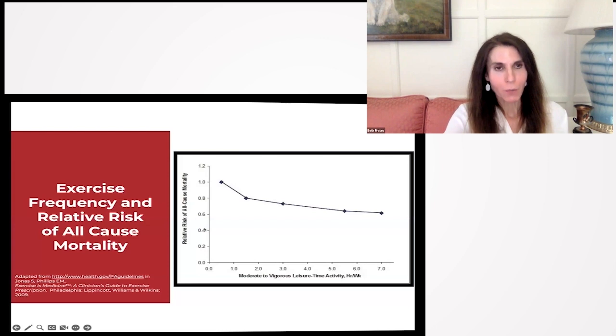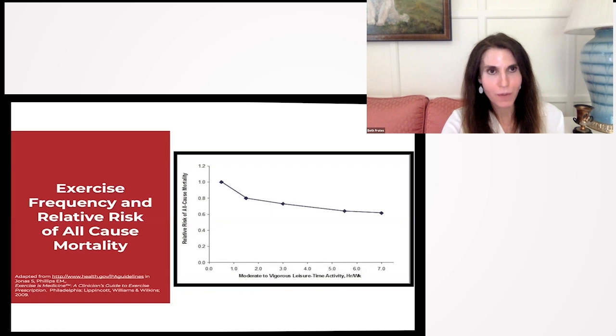This is from the original recommendations from the United States Health and Human Services, and it's how these guidelines were originally created. Here we have on the x-axis moderate to vigorous leisure time activity in hours per week. I'm going to translate that into hours for this graph. 150 minutes, if you do the math, that is two and a half hours right here. That's the recommended dose of physical activity.